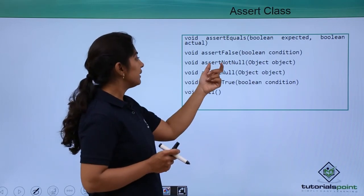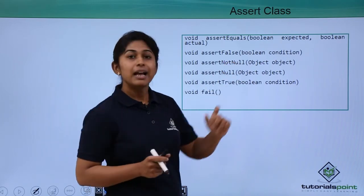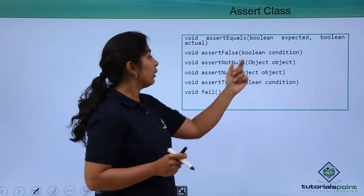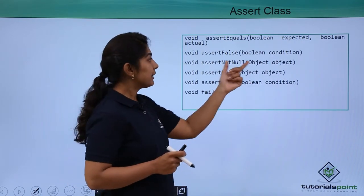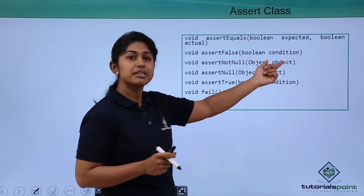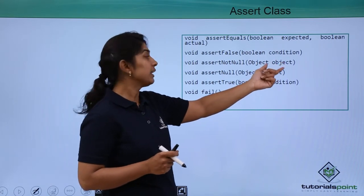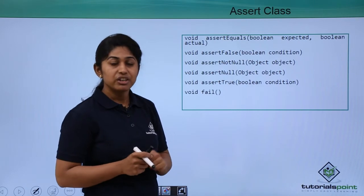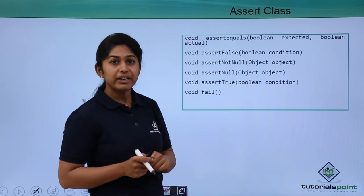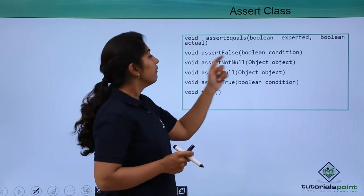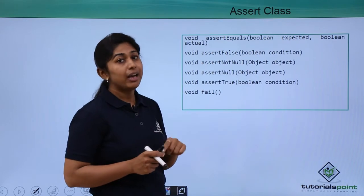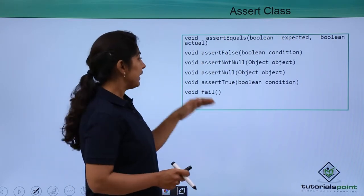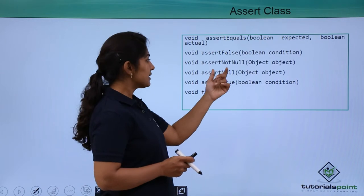The third method is assertNotNull and the argument is an object. Whatever object you provide, this method checks the value of that object and verifies whether the value is not null. The method runs perfectly if the value is not null, and it will throw an error if the value of that particular object is null.